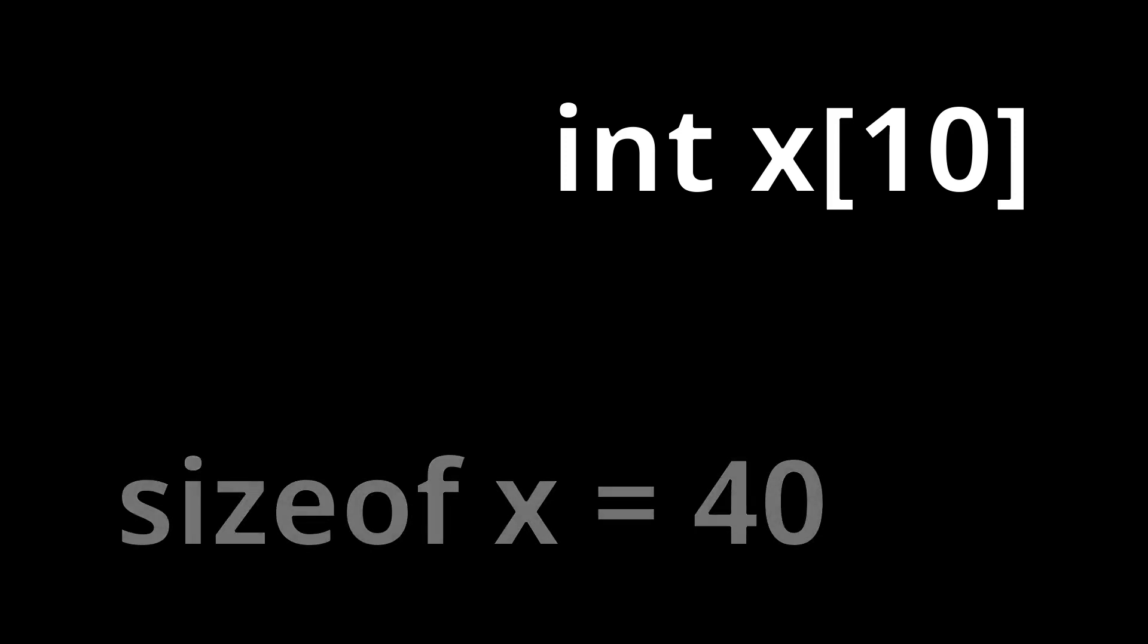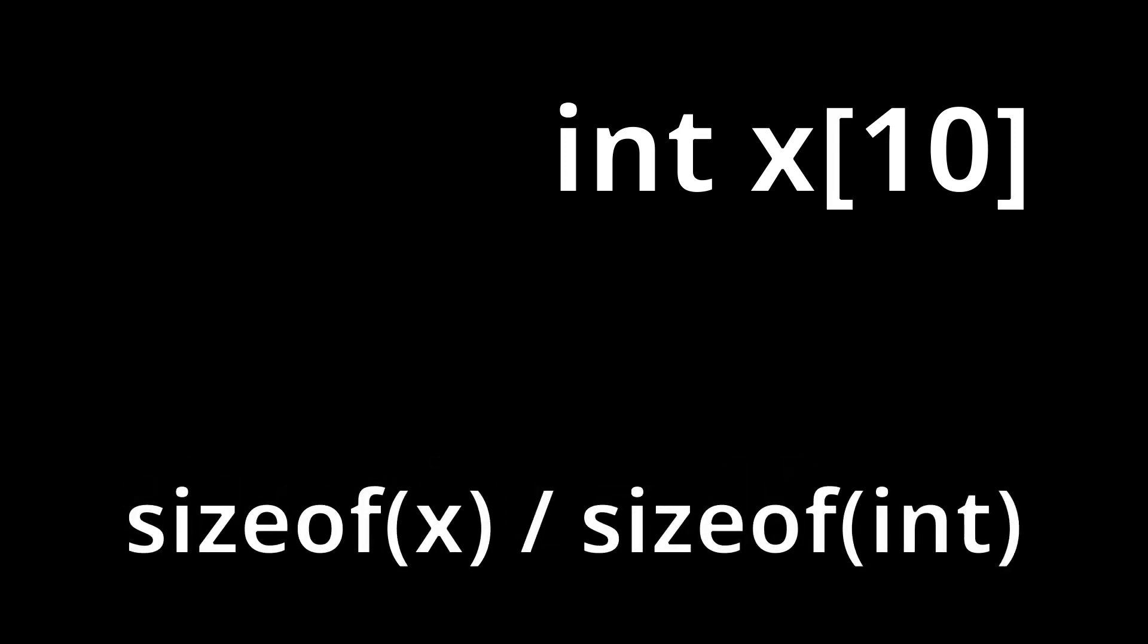Now, to get the number of integers the array actually holds space for, we can run size of x divided by size of int. This gives us exactly 10, which is exactly how many integers we can fit in this array.